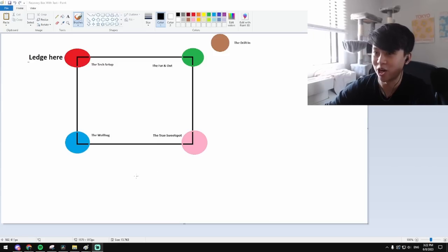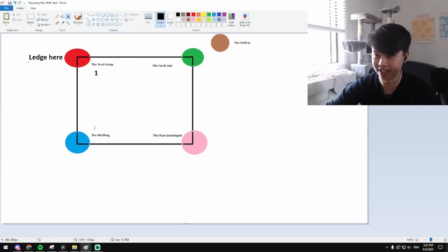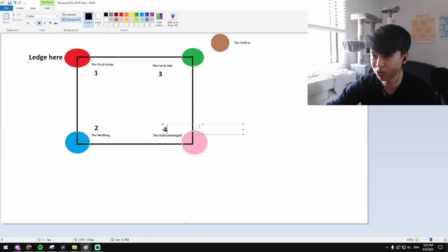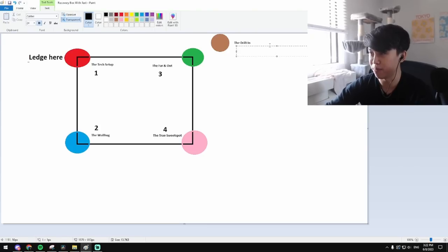I wanted to draw that over step by step with you just so you could see, but here is a prettier, more fleshed out version, and we're going to assign each of these five a number. The tech setup, number one, the wall hug, number two, the far and out, number three, the true sweet spot, number four, and the drift in mix-up is going to be number five.